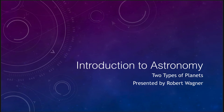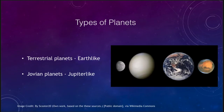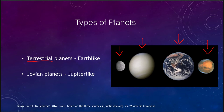The first set is the terrestrial planets. These are the planets that are a lot like the Earth, and therefore we call them terrestrial. That includes Mercury, Venus, the Earth itself, and Mars. So these four are what we call the terrestrial planets.